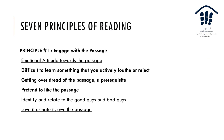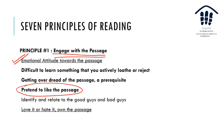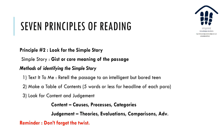Now let's look at seven principles of reading. First: engage with the passage. Have an emotional attitude toward it — even if you actively dislike or dread the subject, pretend to like the passage. Identify the 'good guys' and 'bad guys' in the passage. Love it or hate it — own the passage. Emotions work either way; love or hate will both engage you and that engagement is key.